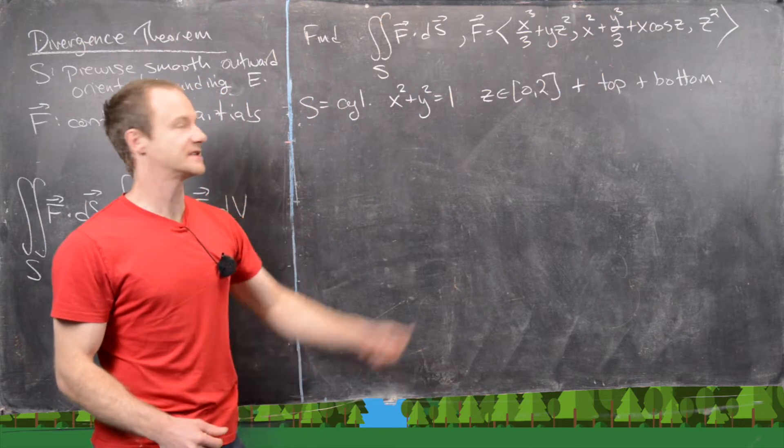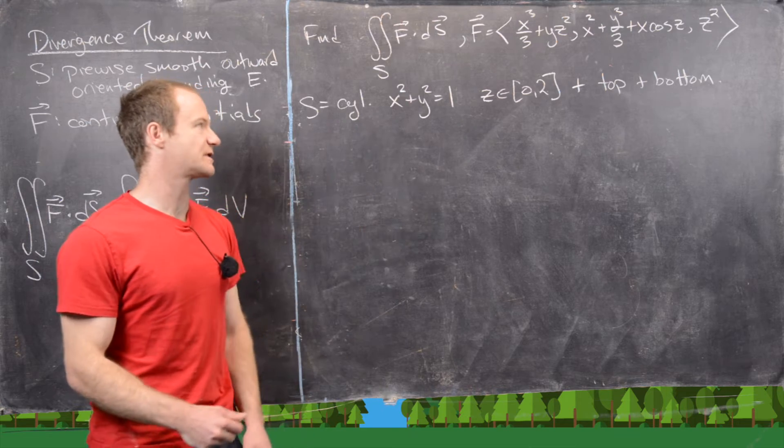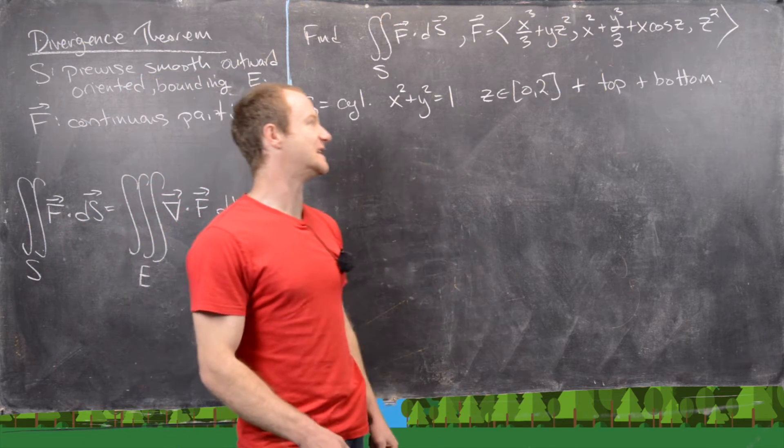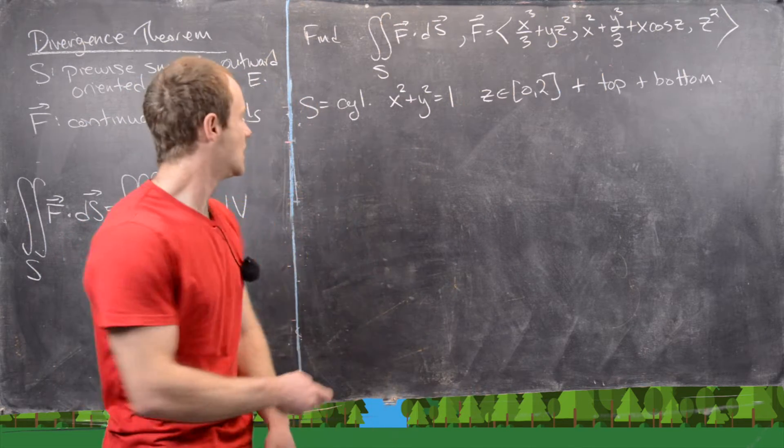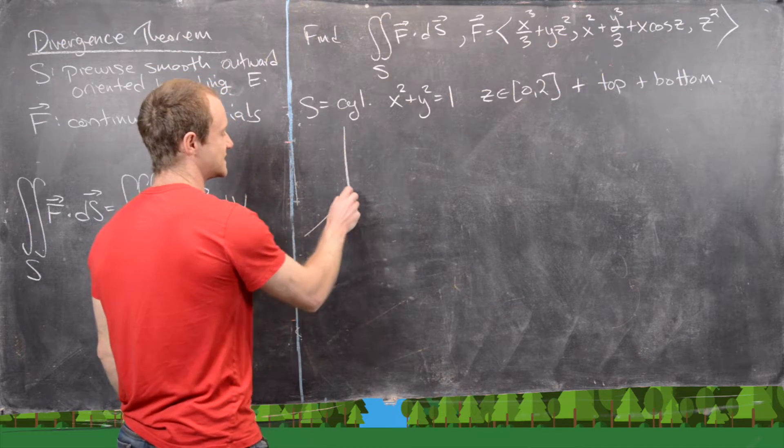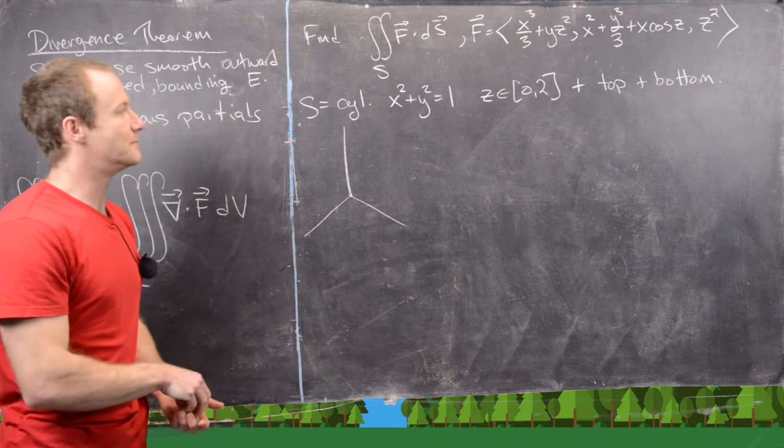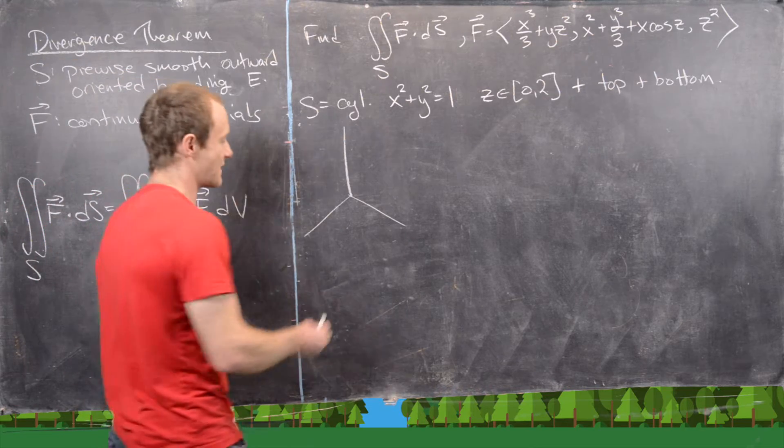And then S, our surface, is a cylinder x squared plus y squared equals one, and then z goes from zero to two. So we can maybe draw a picture of that. Although, since this is a pretty simple surface, it doesn't really matter so much.